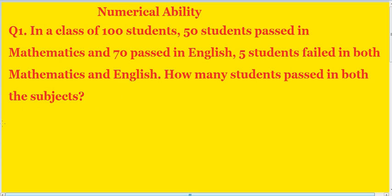In a class of 100 students, 50 students passed in mathematics and 70 passed in English. 5 students failed in both mathematics and English. How many students passed in both subjects?